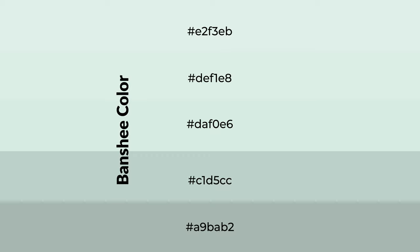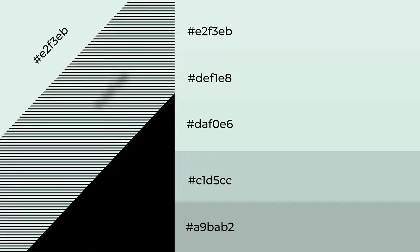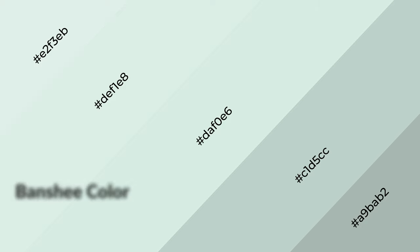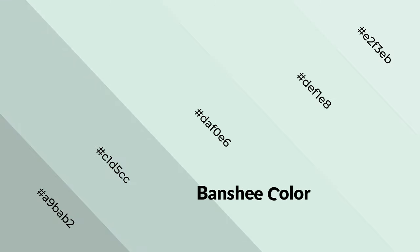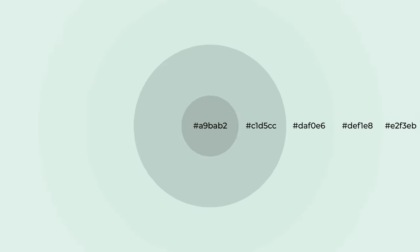Shades are used in patterns, 3D effects, and layers, and they create depth and drama. Banshee is a cool color that emits calming, serene, soothing, refreshing, spacious, unwinding, peaceful, and relaxed emotions. Cool colors are like water, ice, sky, grass, and snow — you can see them used in baby products.